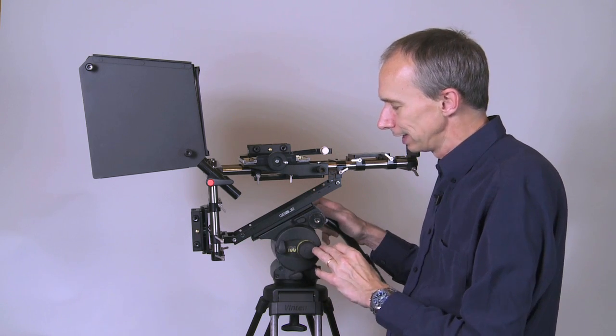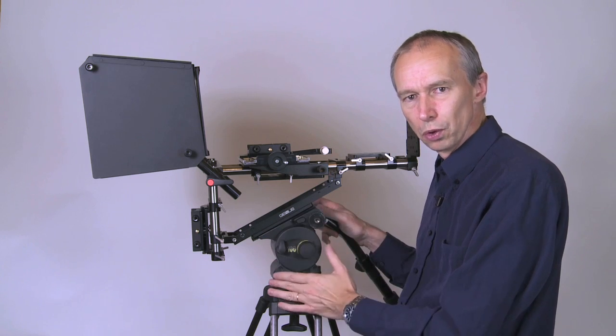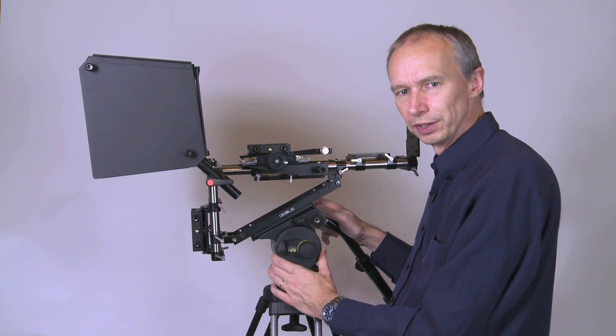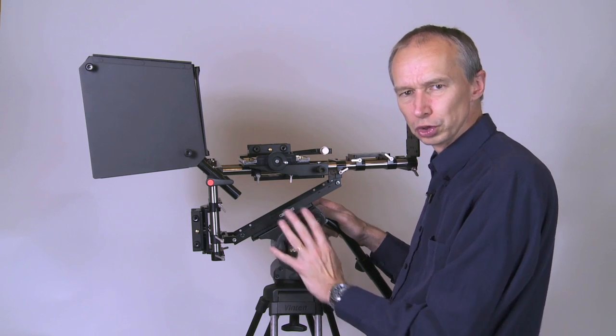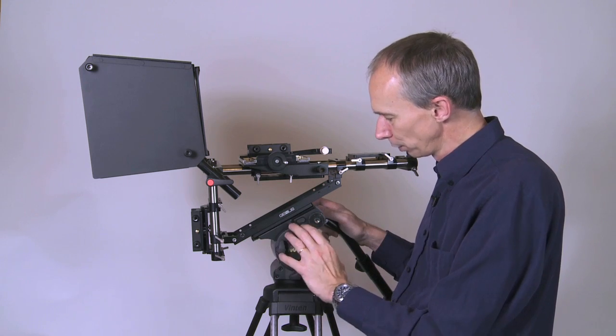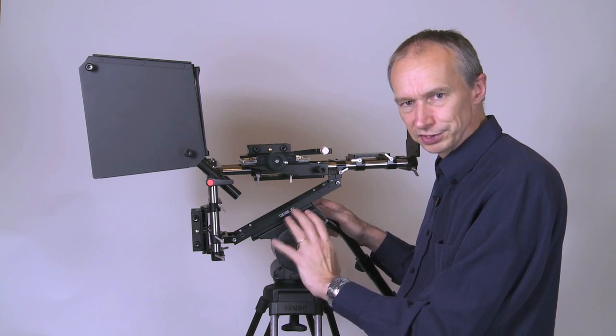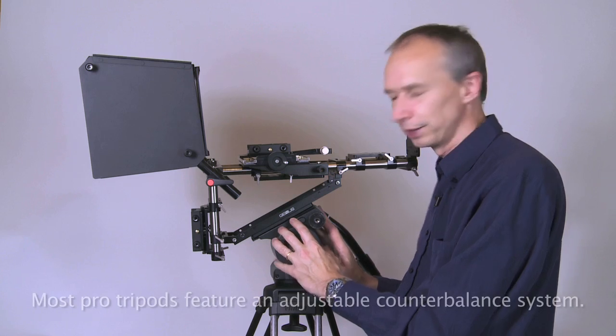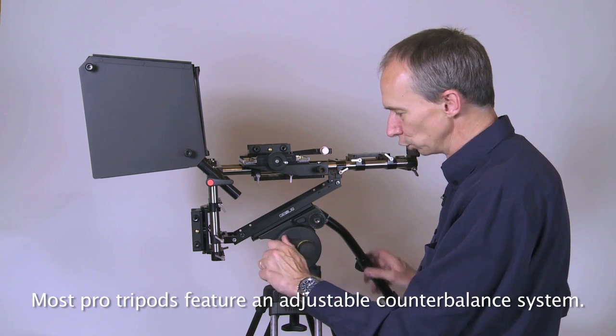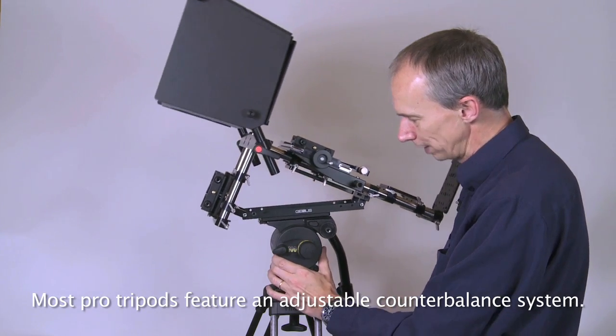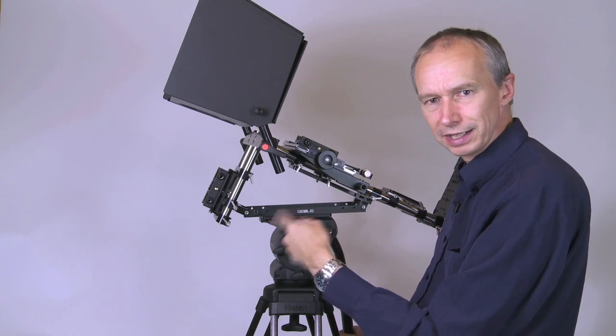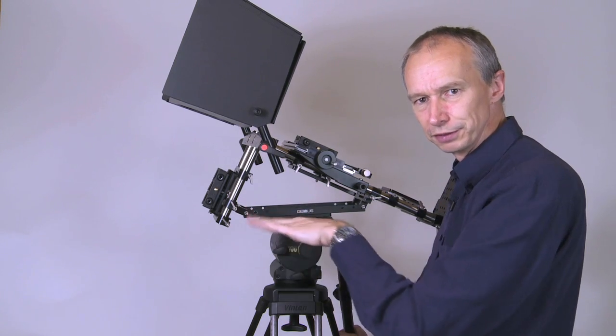Now the other thing that it does is it helps to balance the rig on a tripod like this. So this is a Vinton 100, this is a medium weight tripod, and normally you wouldn't use a tripod like this with a 3D rig, it would probably be considered a little on the light side. But the Vinton 100 has a really good counterbalance spring mechanism in the tripod head. And we can use that with this bracket to help balance the rig. Because normally the tripod would try and sit level, like that, so that this is level.